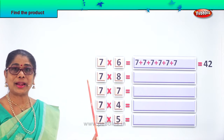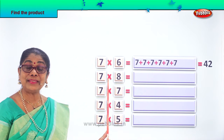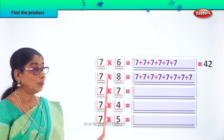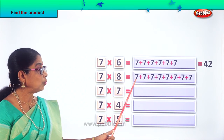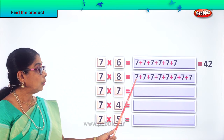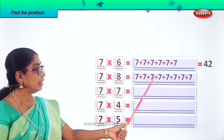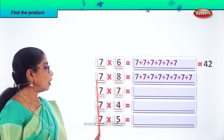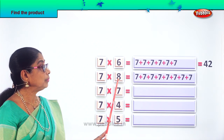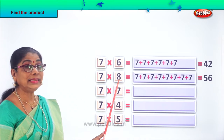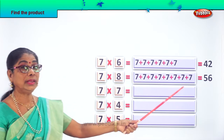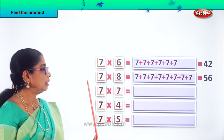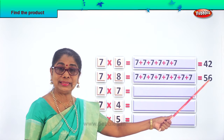Let's look at the next one — find the product of 7 into 8. What are 7 eights? What is the product of 7 into 8? 7 eights give you the answer — 56. What is the product of 7 into 8? 56.